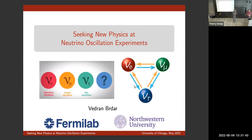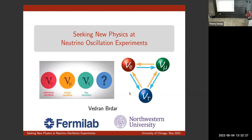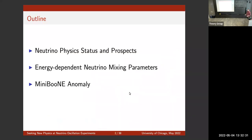Hello everybody, it's a pleasure to have Bruder Vetran here from Fermilab and Northwestern. He will tell us something about neutrino oscillation — neutrinos are the main thing he has worked on. He did his master's at Sanker University, then moved to Mainz, then to the Max Planck Institute in Heidelberg, and now he's at Fermilab and Northwestern. He will first give a brief introduction, then discuss two of his recent works: energy-dependent neutrino mixing parameters, and the MiniBooNE anomaly.